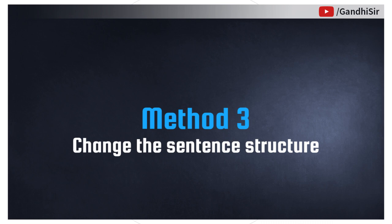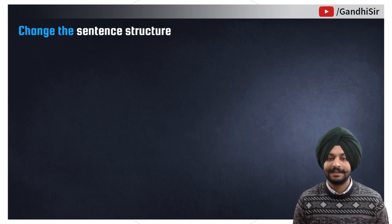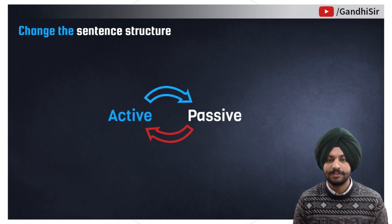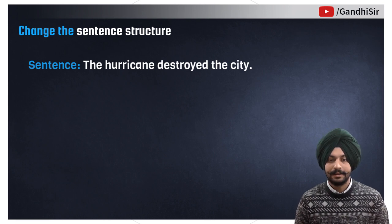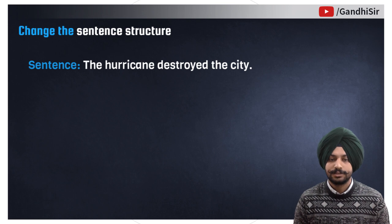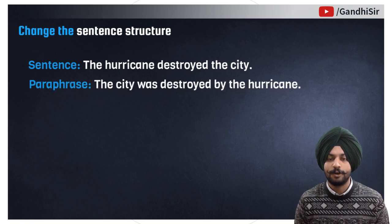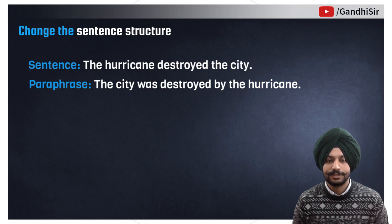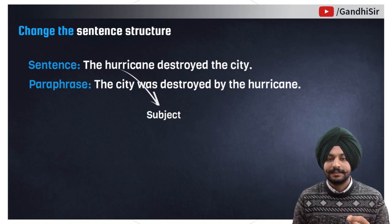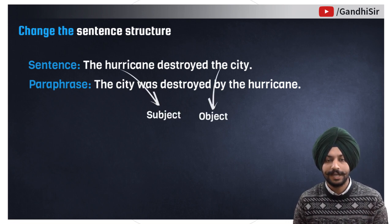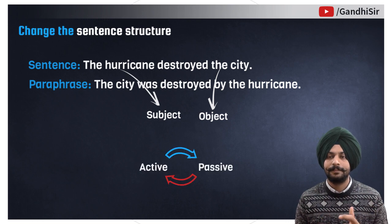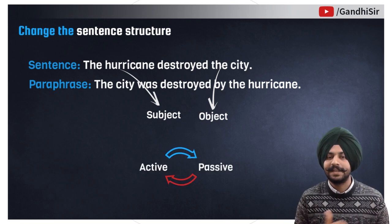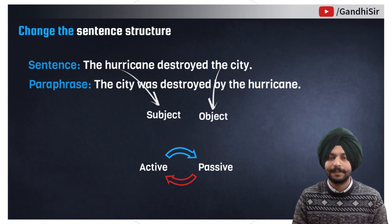A third way to paraphrase is to change sentence structure. This could be by changing the sentence from passive to active, or vice versa, or by changing the order of the clauses. For example: 'The hurricane destroyed the city' — this is in active voice. We can paraphrase it as: 'The city was destroyed by the hurricane.' The subject 'the hurricane' became the object, and the object 'the city' became the subject. We changed the active into passive, and also changed the verb 'destroyed' into the past perfect passive form.